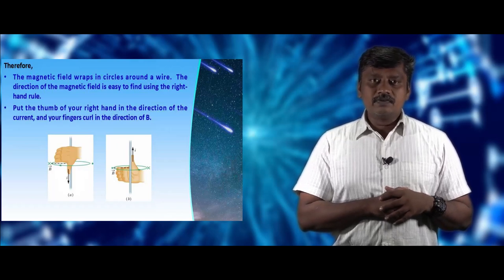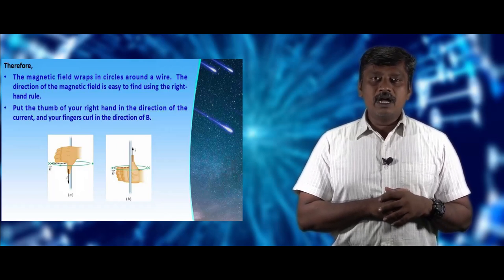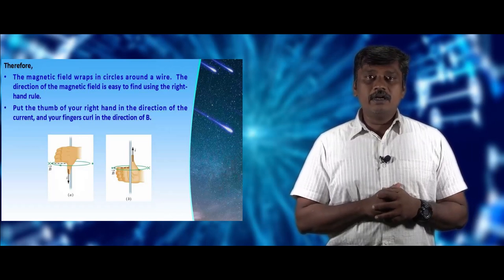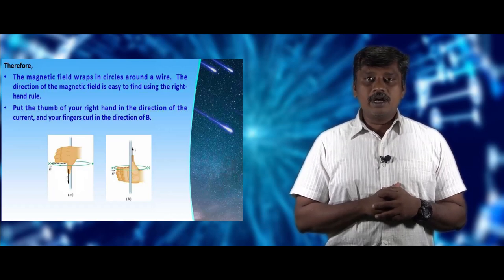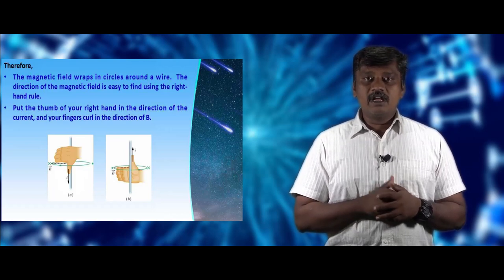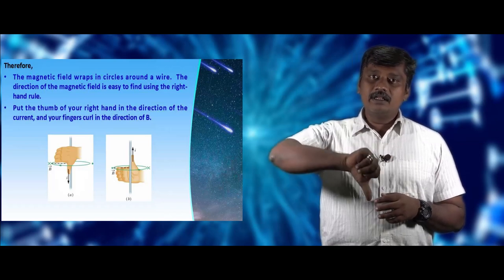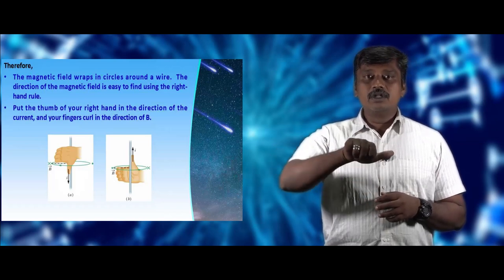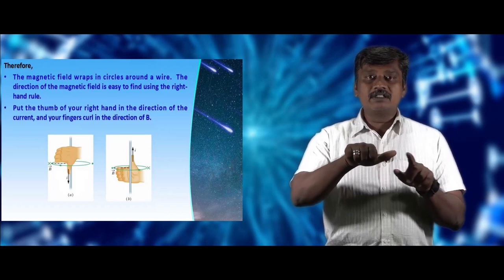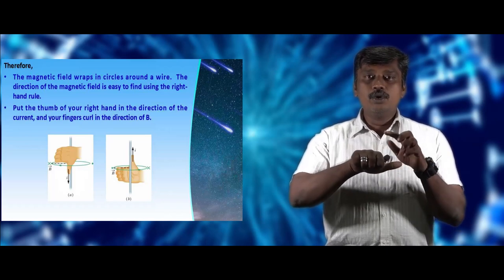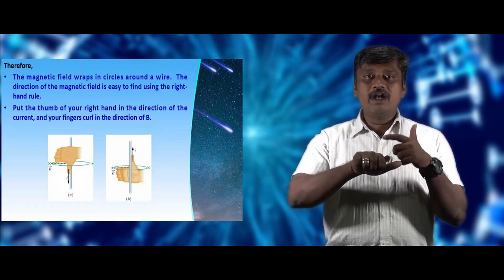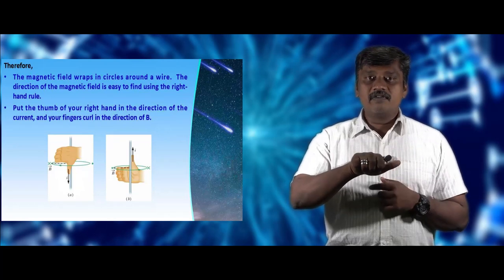From the expression, it is found that the magnetic field wraps in a circle around the wire. It is possible to find the direction of the magnetic induction due to the current carrying wire using the right-hand rule. We keep the right hand such that we denote the direction of the current carrying wire, and from that the magnetic field direction around the wire can be found.